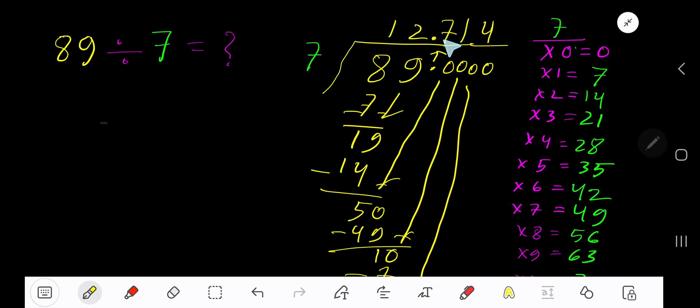You can bring down more zeros, but since we have gotten three places after the decimal, just place here three dots. So our answer is 12.714...